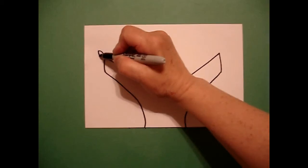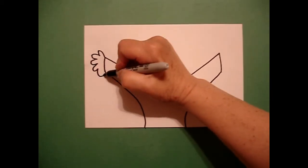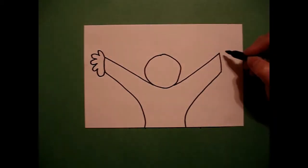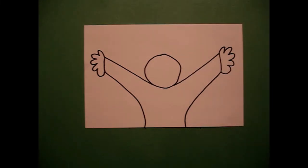Curved line, curved line, three, four, five on the left, and curved line one, two, three, four, five on the right.